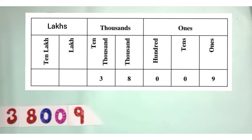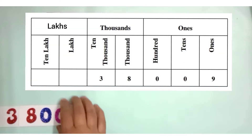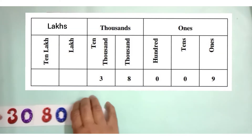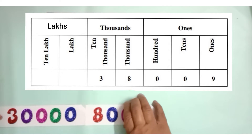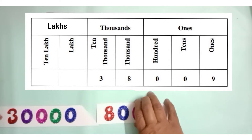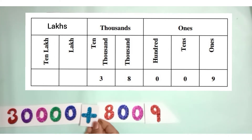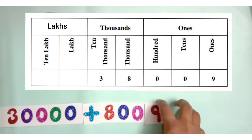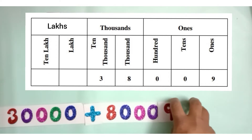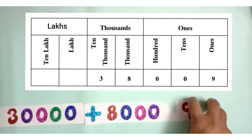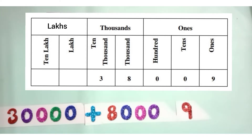Number 3 is on the place of 10,000, so it's 30,000. Number 8 is on the place of 1000, so it's plus 8,000. And number 9 is on 1's place, so plus 9.